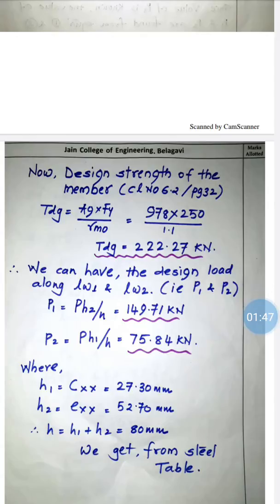The design strength due to gross yielding is Tdg = Ag × fy / γm0. Here Ag is the gross area from the steel table, which is 978 mm². So Tdg = 978 × 250 / 1.1 = 222.27 kN. This is the total design load that can be carried by the member.